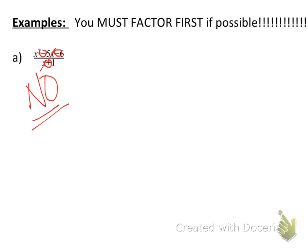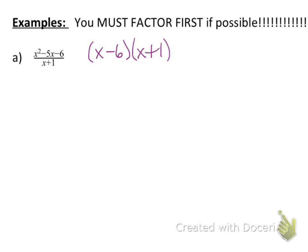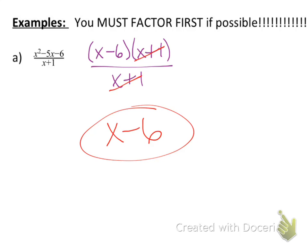Instead we need to factor. How does x² - 5x - 6 factor? This factors as (x - 6)(x + 1). We still have (x + 1) in the denominator, so we can cancel the common factors of (x + 1) on the top and bottom, leaving us with x - 6.